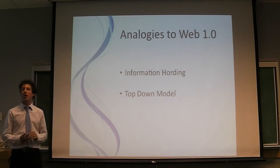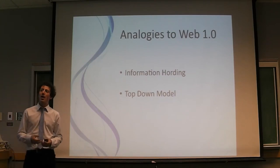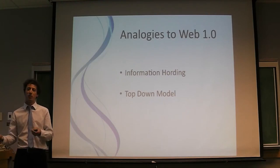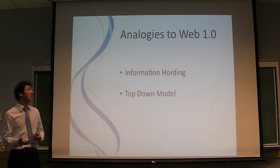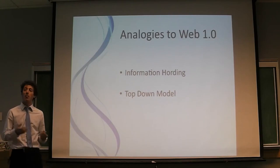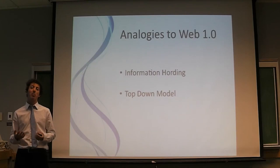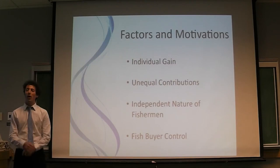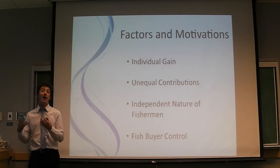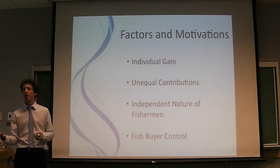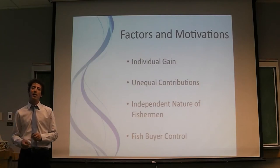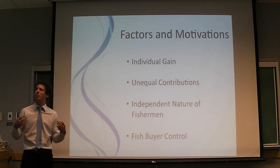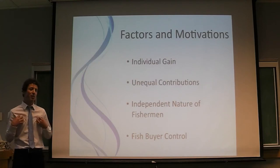There is also this top-down model we see in Web 1.0, where mainstream media determines what we consume. We see this in commercial albacore tuna fishing where the fish buyer determines what we are paid for our fish. Whatever fish a fisherman catches and brings back to the dock is what they get paid for, so there is an incentive to share, but also a tendency to worry about yourself because that is ultimately what you are getting paid for.